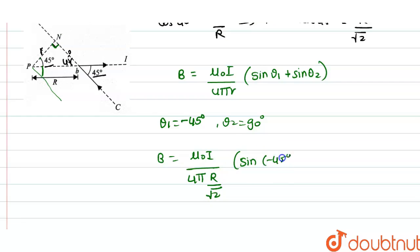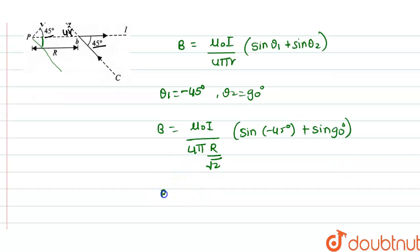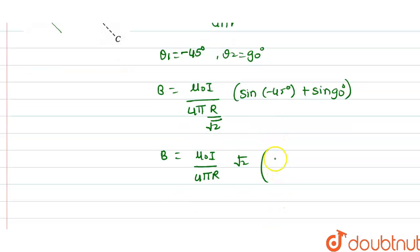minus of 45 degree plus sine of 90 degree. So we can write this as B equal to mu naught i divided by 4 pi R into root 2. Into here, sine of minus theta is minus sine theta, so